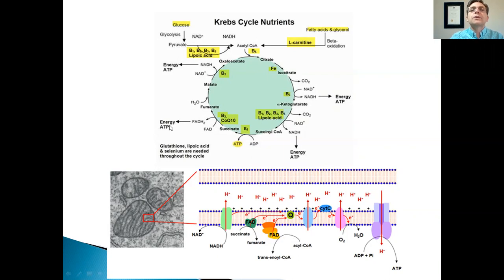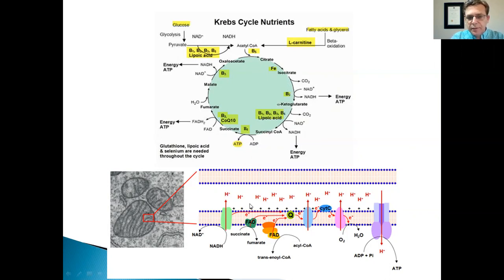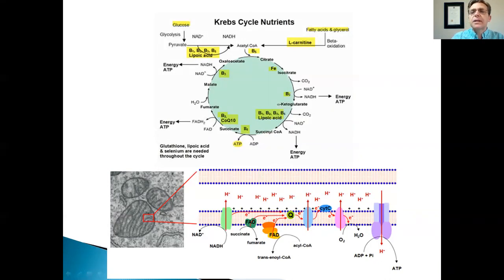Cytochrome C requires copper. Notice that many different vitamins and minerals are needed for this process. Wherever you see NAD, it's a derivative of vitamin B3. Wherever you see FAD, it's a derivative of vitamin B2, riboflavin. Coenzyme Q10 does what many of these cofactors do — pass electrons until they reach the ATPase synthase molecule at the end, where most of the ATP is produced.